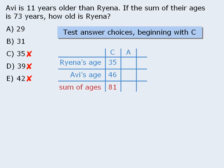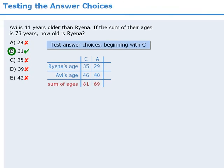So let's test answer choice A, which tells us that Ryena is 29 years old. Since Avi is 11 years older than Ryena, he must be 40 years old. When we find the sum of their ages, we get 69. Since the question tells us that the sum of their ages must be 73, we can eliminate answer choice A, which means answer choice B must be the correct answer by process of elimination.